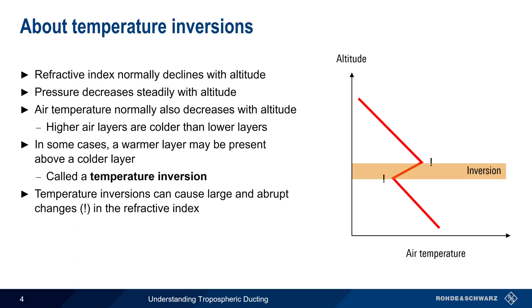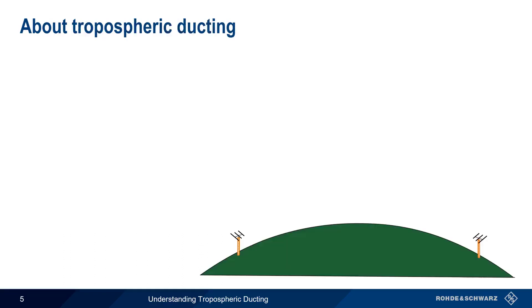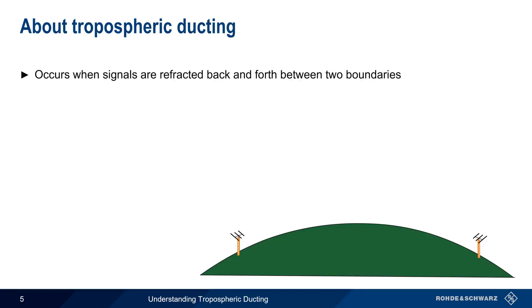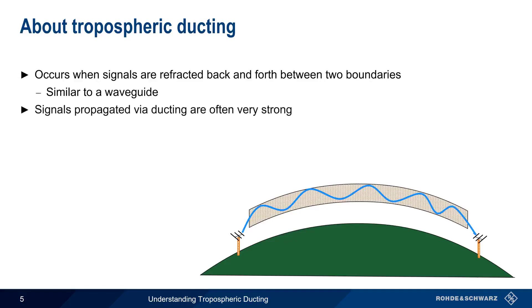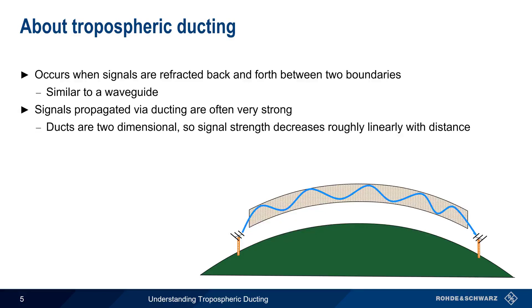These abrupt changes can lead to the formation of a tropospheric duct. Tropospheric ducting occurs when signals are refracted back and forth between two boundaries, in a way similar to how signals travel through a waveguide. Signals propagated via ducting are often very strong. Ducts are essentially two-dimensional, so signal strength decreases more or less linearly with distance, in contrast to propagation in three dimensions, in which power decreases by the square of the distance.